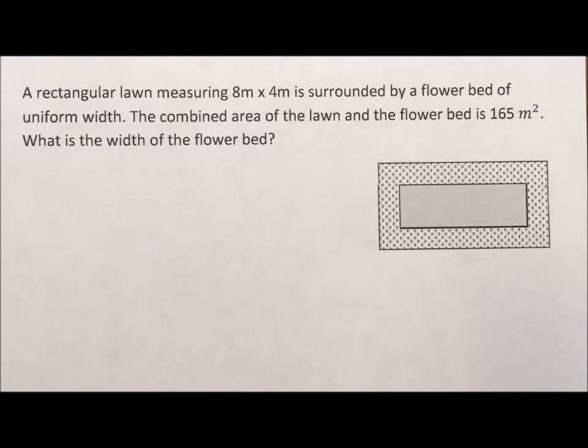In this one, it says a rectangular lawn measuring 8 meters by 4 meters is surrounded by a flower bed of uniform width. We have a nice little picture. The combined area of lawn and flower bed is 165 meters squared. What is the width of the flower bed?